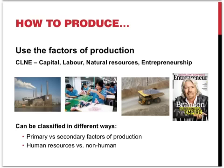In the process of production, the different factors — capital, labor, natural resources, and entrepreneurship — are used. These factors of production can be classified in different ways. The primary factors of production are natural resources and labor, while the secondary factors would be capital and entrepreneurship. It's also possible to classify them into human and non-human resources, where labor and entrepreneurship are the human resources and capital and natural resources make up the balance.